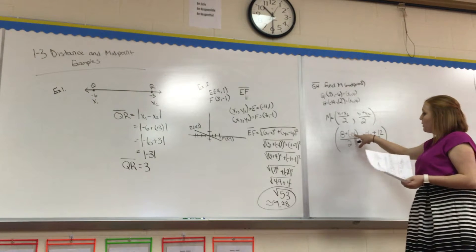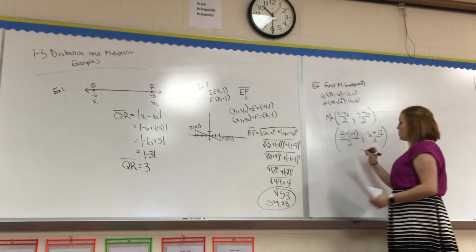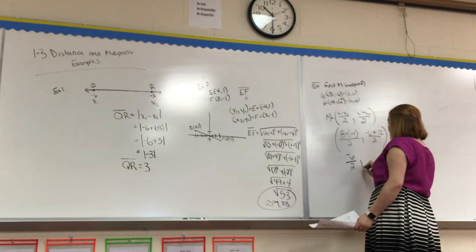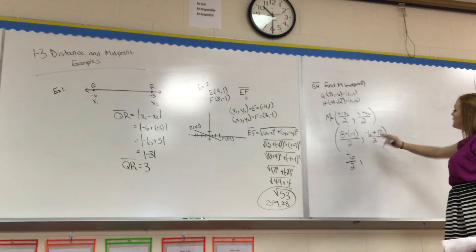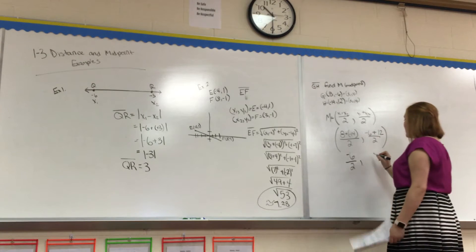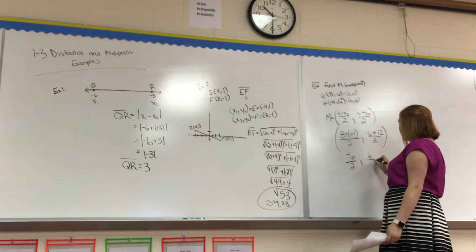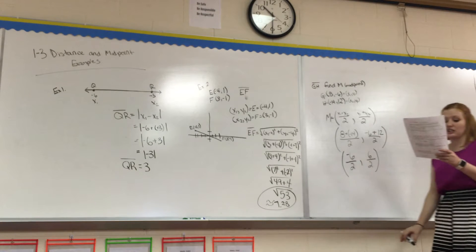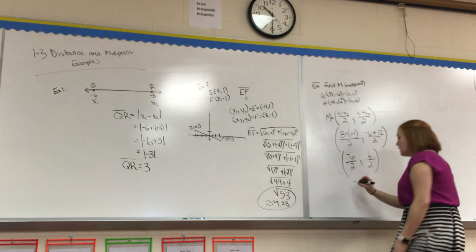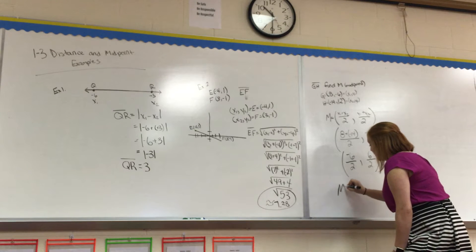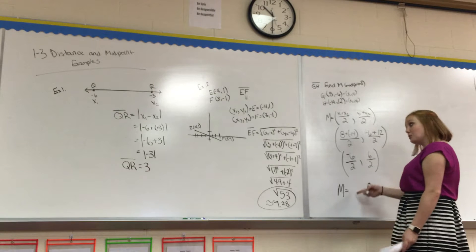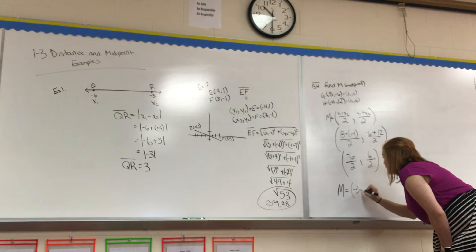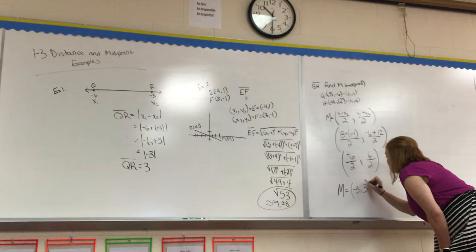So, we get 8 plus negative 14, which is a negative 6 over 2, comma, and then we get a negative 6 plus 12, which is a positive 6 over 2. Does 6 go into 2? Yes, it does. So, we get M equals, this is our midpoint, equals the ordered pair of negative 3, 3.